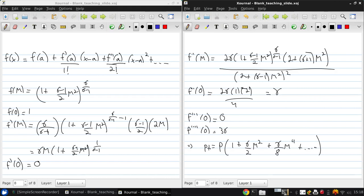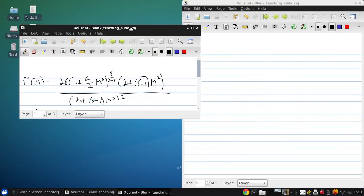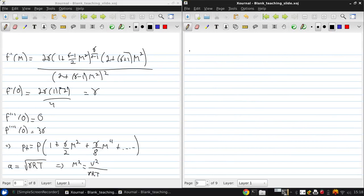And if we express the Mach number in terms of the velocity, and you recall from your third-year fluids that the speed of sound can be written for an ideal gas as the square root of gamma RT, then m squared is v squared over gamma RT.